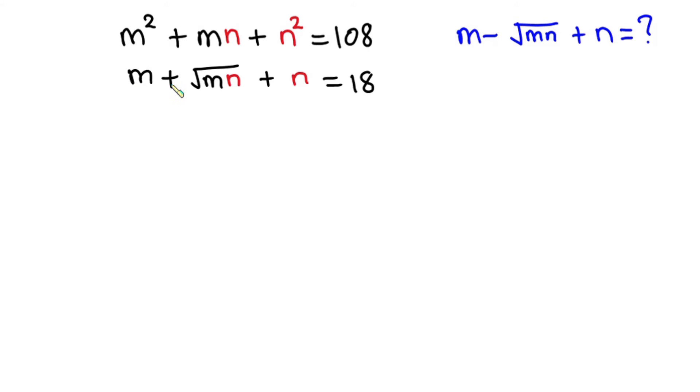Hello everyone, in this video we have this nice problem. We have m squared plus mn plus n squared equals 108, and we also have m plus square root of mn plus n equals 18. We have to find the value of m minus square root of mn plus n.